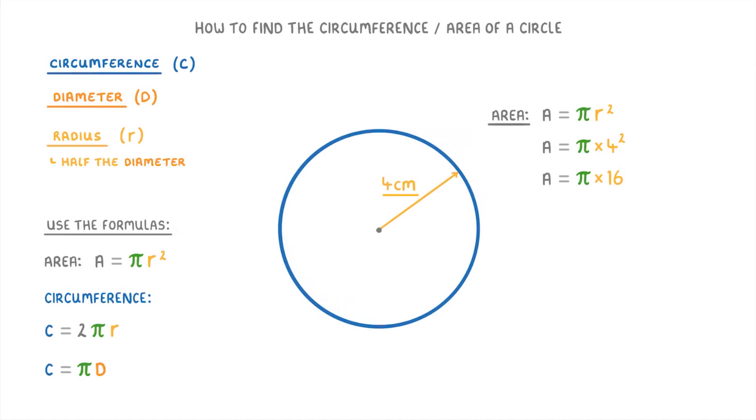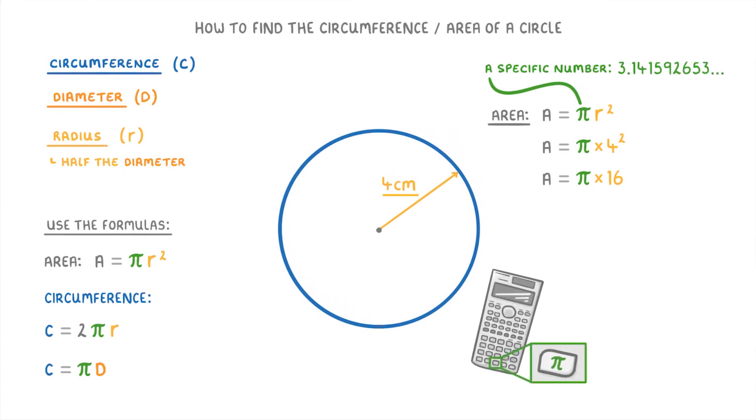If you haven't heard of pi before, it's nothing complicated, it's just a specific number. Weirdly though, it's an irrational number, so it actually goes on forever. If you have a calculator, you can just use the pi button, and do pi times 16. Otherwise we normally round it to 3.142, and so you'd have to work out 3.142 times 16 by hand, which is kind of tricky, so most of the time you just use a calculator. Either way though, we should end up with 50.3 if we round it to 3 significant figures. And remember the units here would be square centimeters, because it's an area.